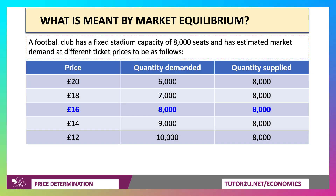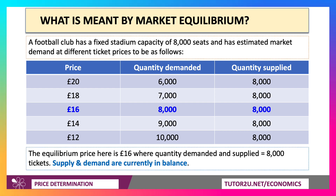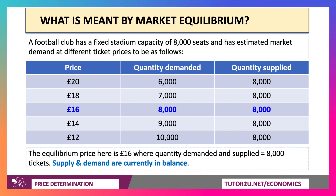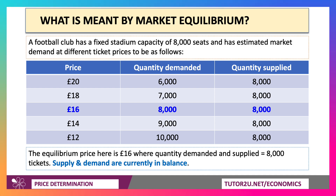Simple example here: let's say a football club has a fixed stadium capacity of 8,000 seats, so quantity supplied is invariant to price. There's the market demand at different ticket prices, and you can see that at £16, quantity demanded equals 8,000. If the price was above that, the demand will be 1,000 short of capacity. But if the price goes down, you can't reach that level of demand because there's a limited supply.